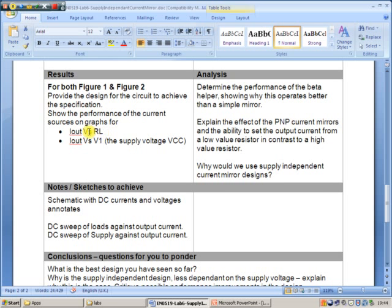For the output current versus the load resistance for both figures, they want to be on the same graph so we can derive differences between them. And the output current versus V1, V1 being the supply voltage to both circuits, so we can see how they perform with respect to supply variations.